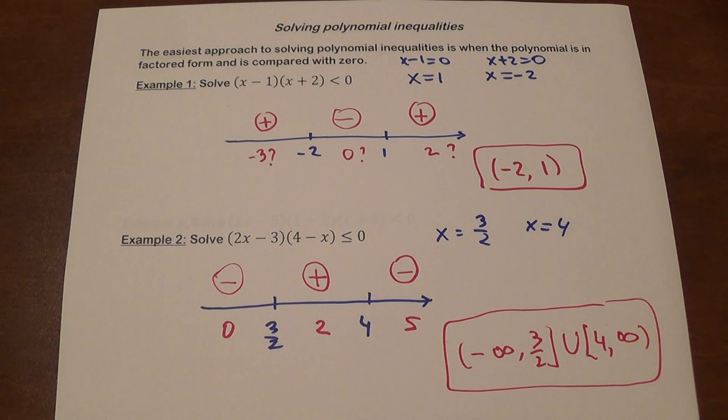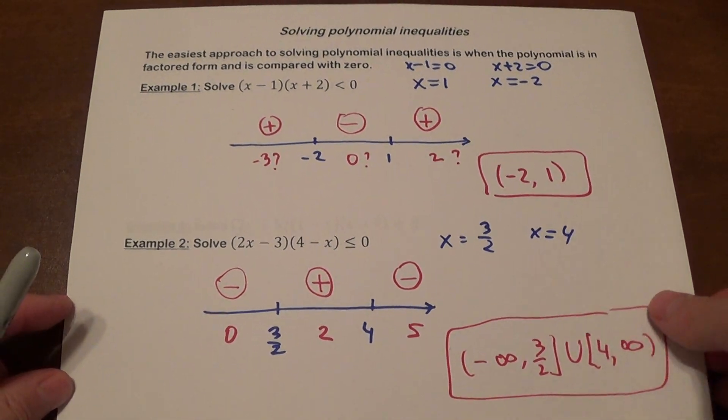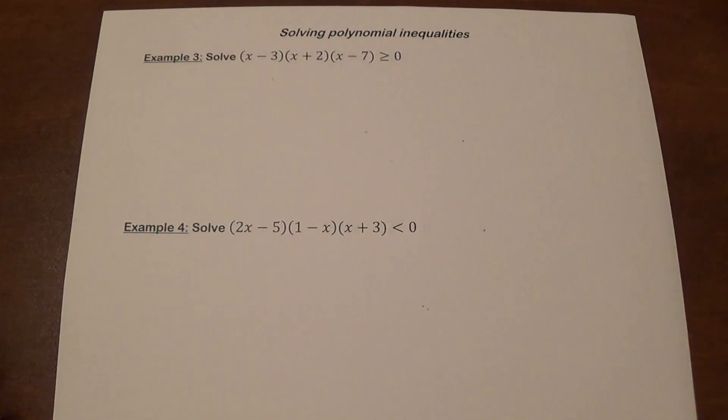The answer is from negative infinity to three halves — and because it's less than or equal to, we include that boundary — union four to infinity. That's basically the concept, and it doesn't matter what degree you have; it's the same process.